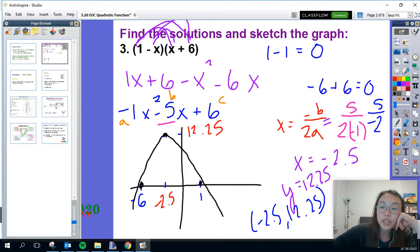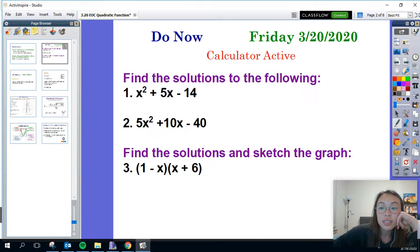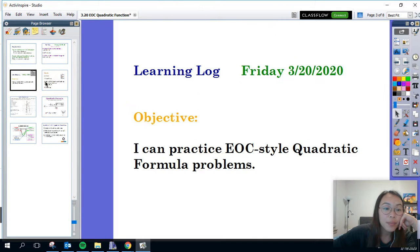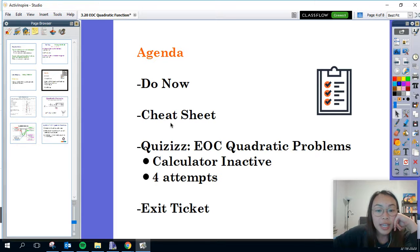So that's basically all I wanted to do as a review. Our agenda for today is I'm going to give you a little cheat sheet before you have your final activity for the week. Your practice is going to be a quizizz of EOC quadratic formula problems that are calculator inactive. I'm going to give you as many as four attempts. Make sure that before you finish the week, you do your exit ticket.